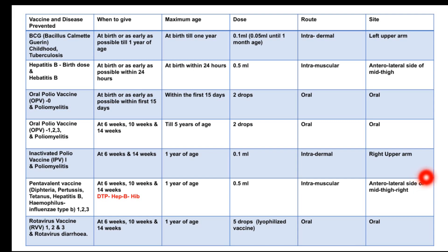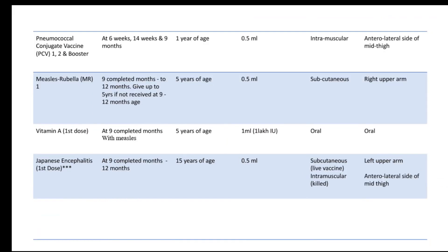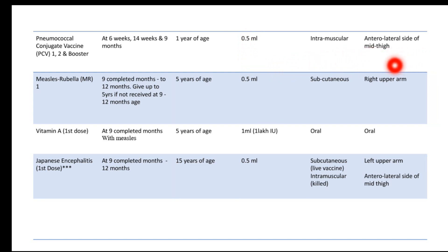The Rotavirus Vaccine (RVV) protects against Rotavirus diarrhea. It is given at the 6th, 10th, and 14th week, up to 1 year of age. Since it is a lyophilized oral vaccine, the dose is 5 drops via the oral route. The Pneumococcal Conjugate Vaccine (PCV 1, 2, and booster) is given at the 6th week, 14th week, and 9th month, up to 1 year of age. The dose is 0.5 ml given intramuscularly at the anterolateral side of the mid thigh.